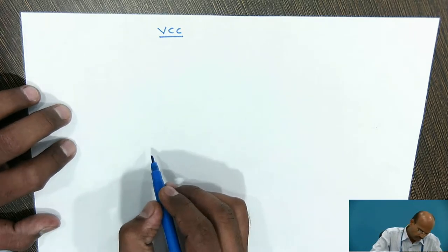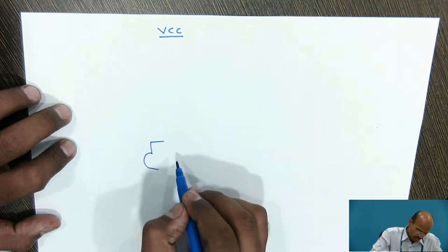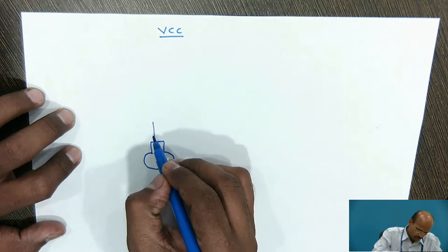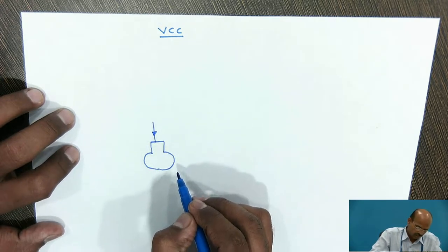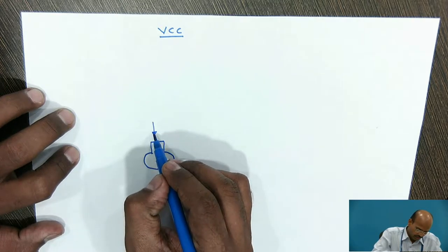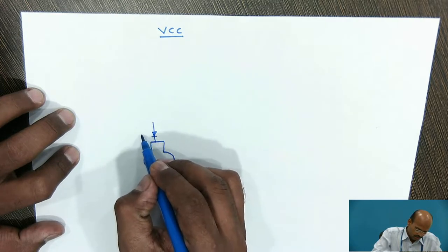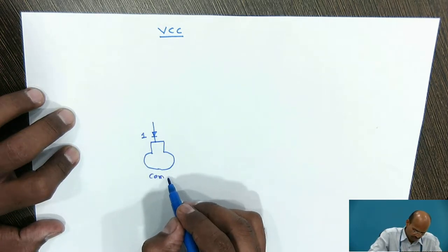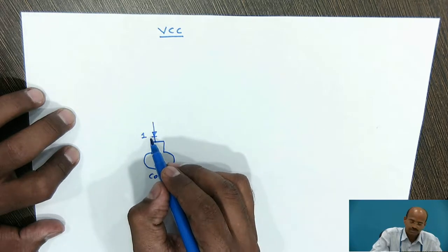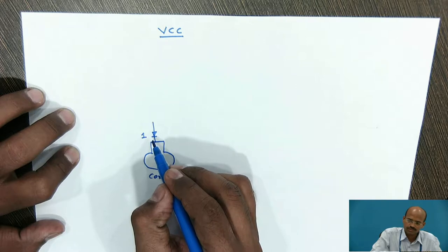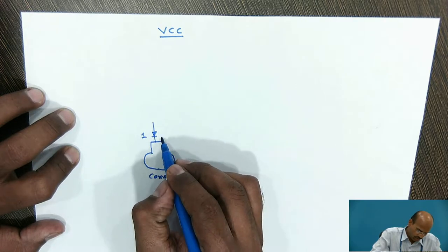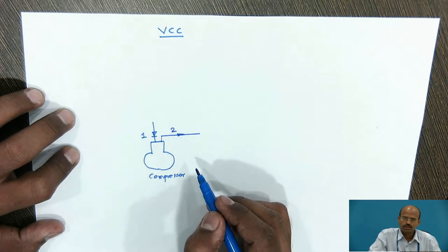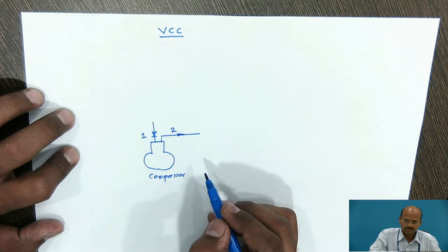This is the symbol for the compressor. The function of the compressor is to compress the vapor refrigerant. For the theoretical VCC cycle, the inlet to the compressor is assumed as saturated vapor, so the compressor will compress dry and saturated refrigerant vapor into superheated vapor. After studying this schematic diagram, we will plot the cycle on the pH diagram.